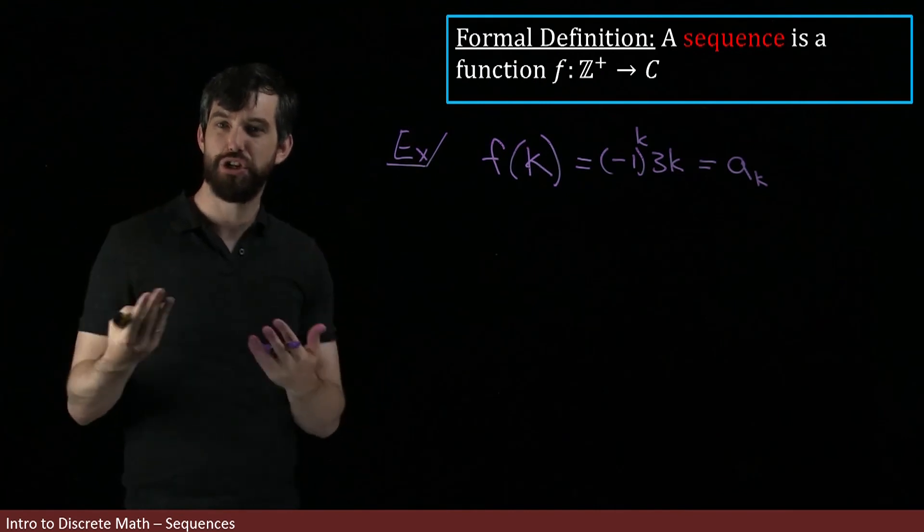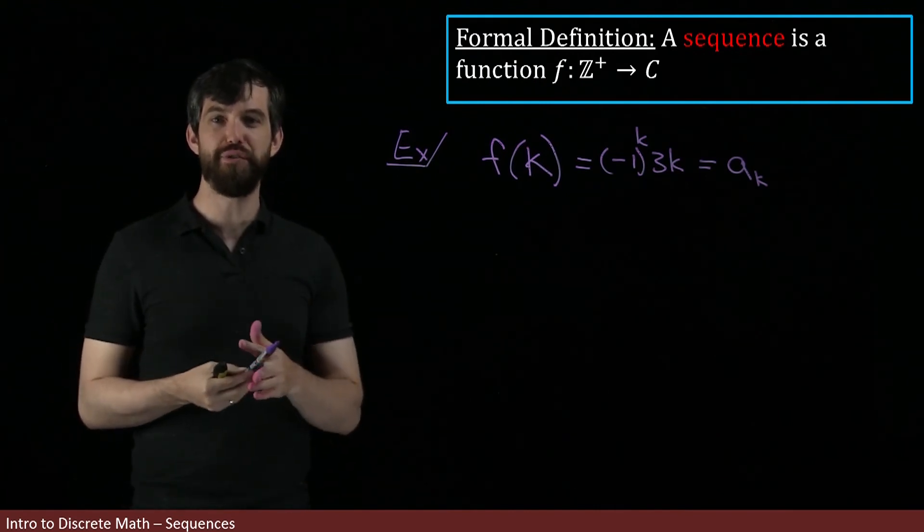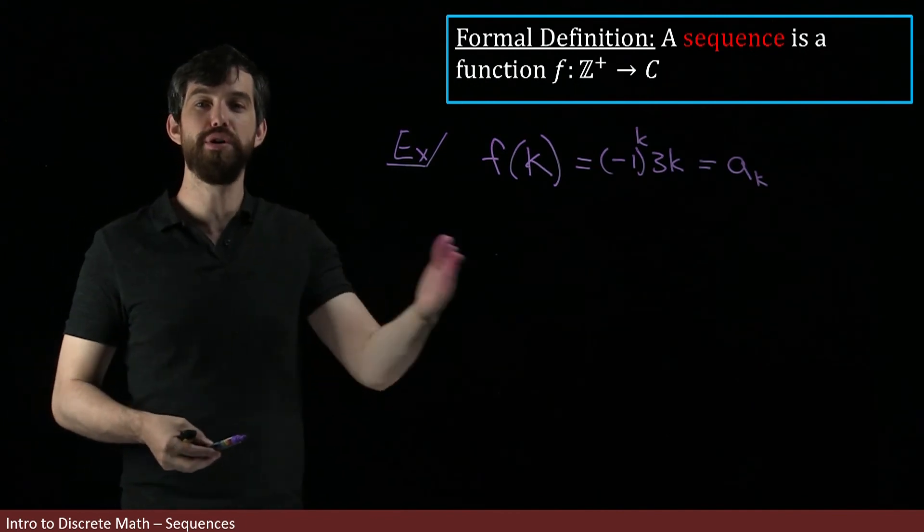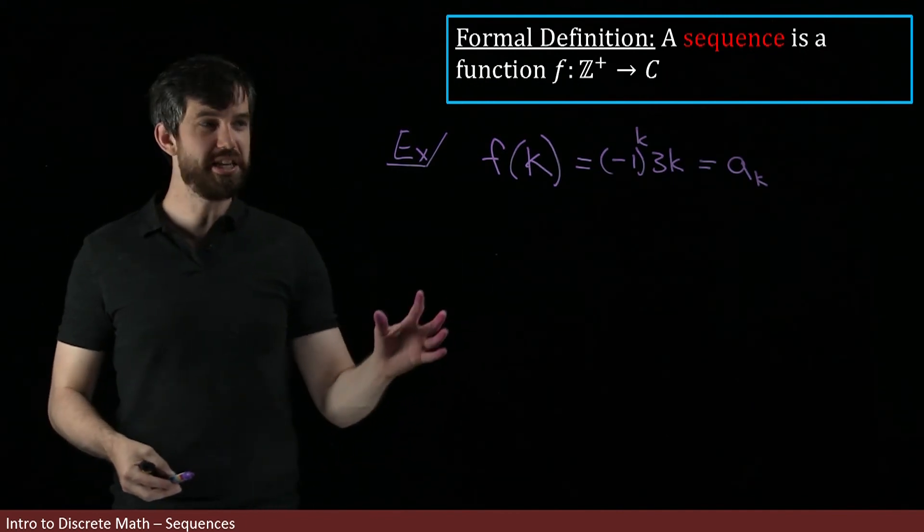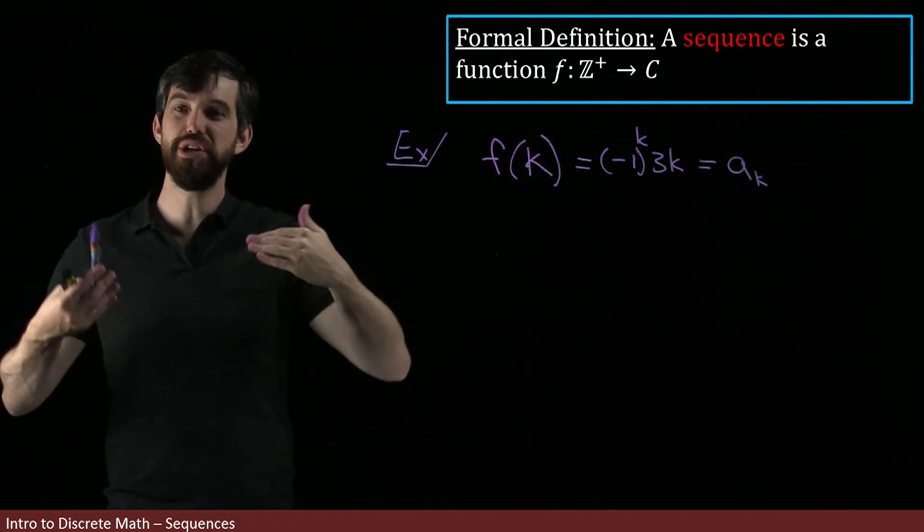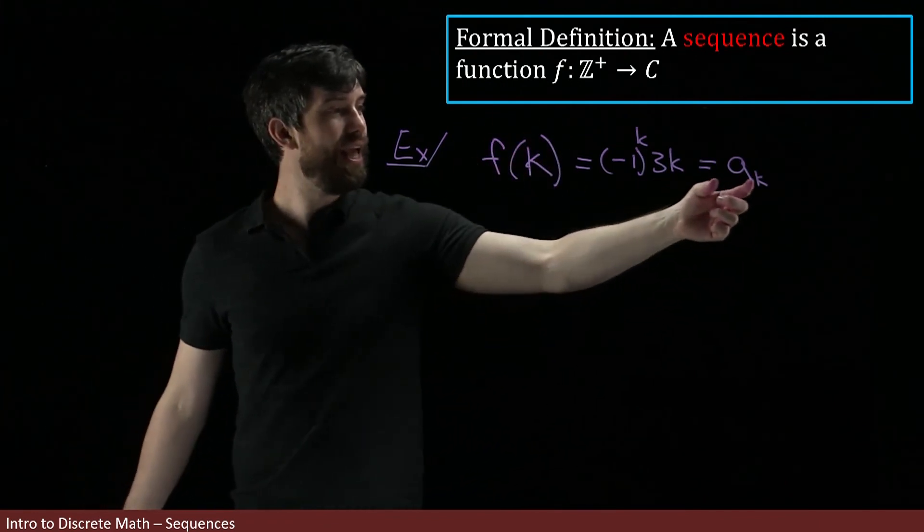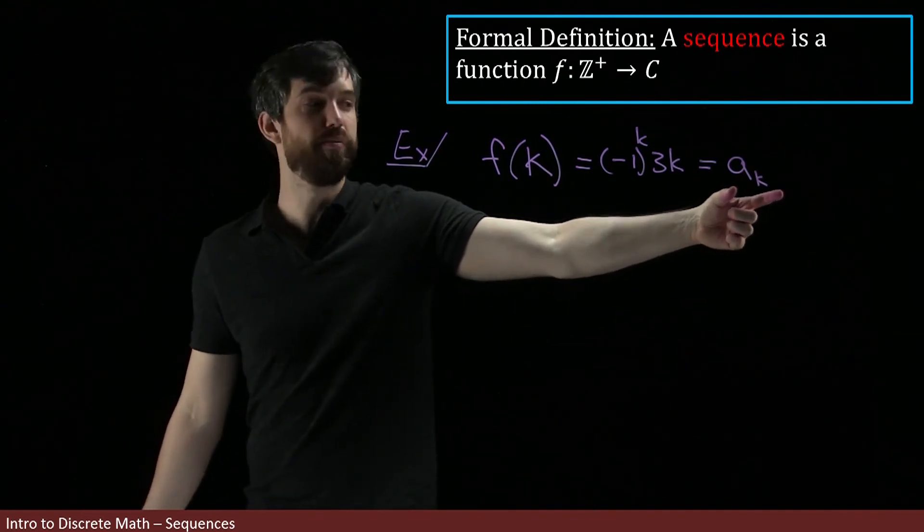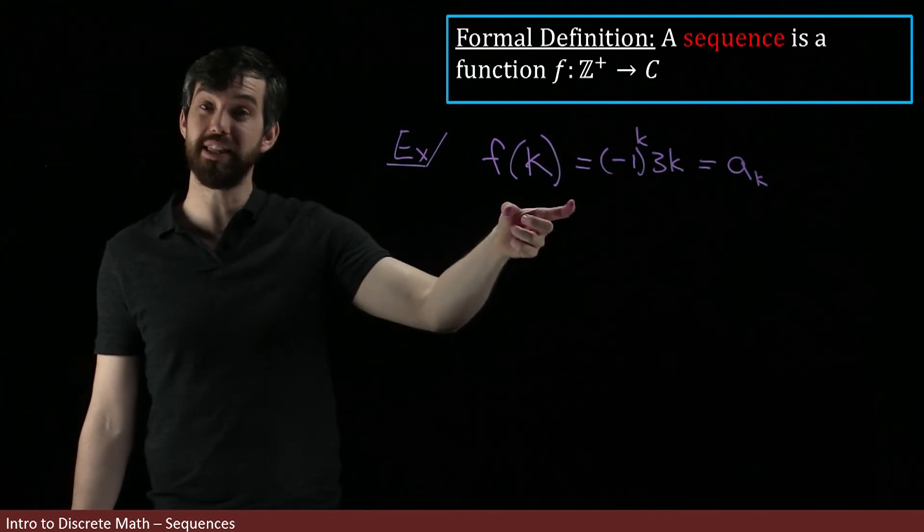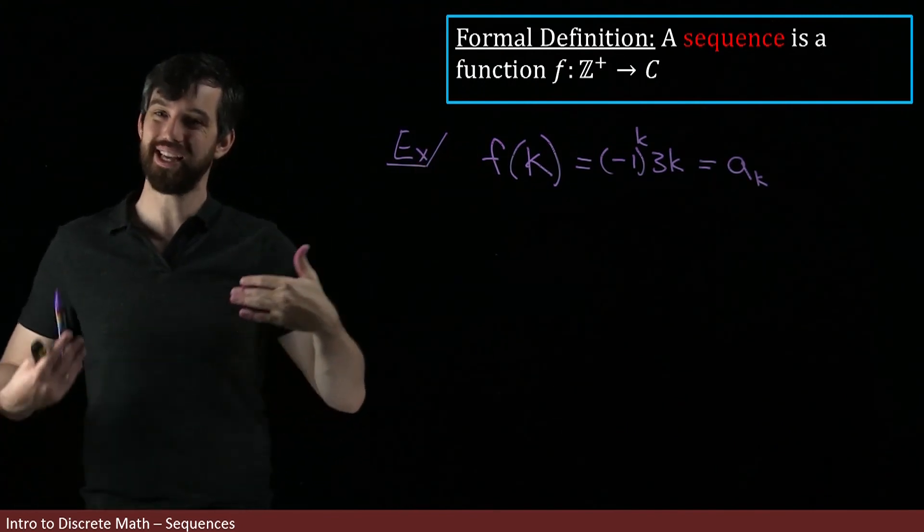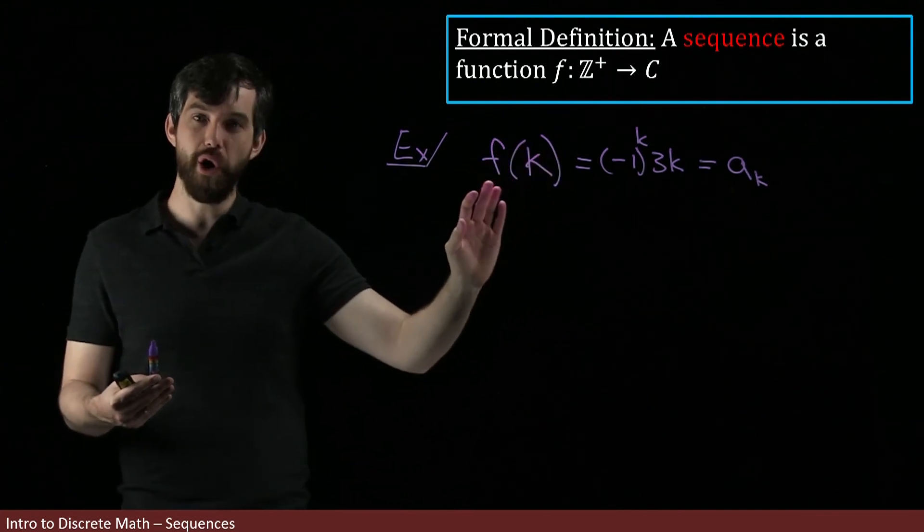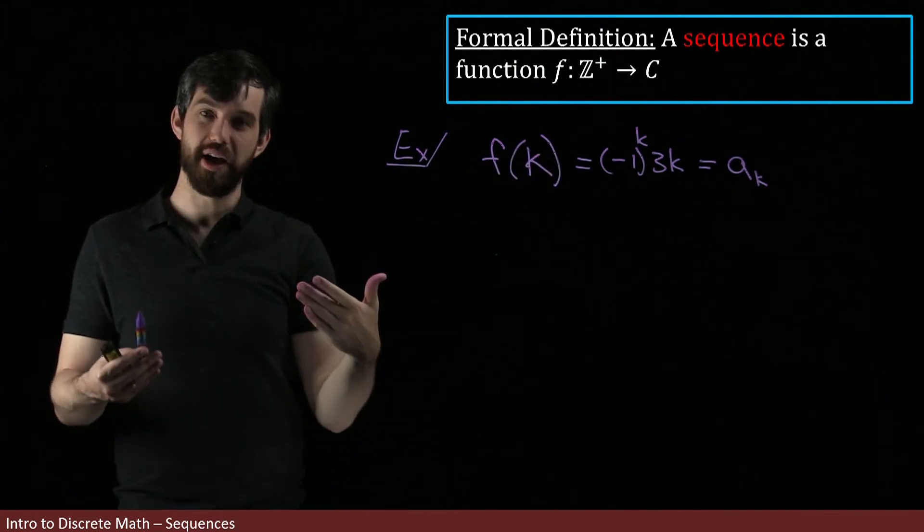However, it's really intuitively useful to us if we actually think of sequences more in the informal sense, that they're this ordered list of numbers. In other words, I typically don't use the f(k) notation at all. When I'm denoting a sequence, I will say a_k, the kth term in my sequence, and I'll give the formula that depends on k. And I don't make explicit that I'm talking about a function. I don't make explicit a particular f. However, that is what is going on behind the idea of a sequence.